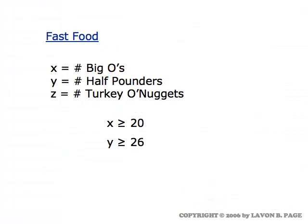When you're doing the setup of the problem, you'll of course have three variables to represent the number of each type item that they produce. But the translation into an inequality of that sentence that we were just reading is that X has to be greater than or equal to twenty to meet their anticipated demand for Big O's, and Y has to be greater than or equal to twenty-six to meet their anticipated demand for the Half Pounders.